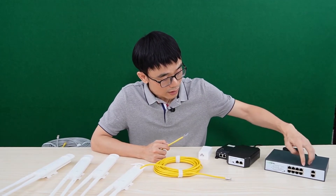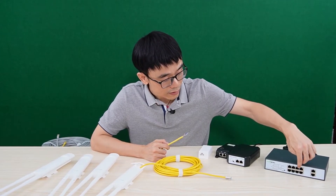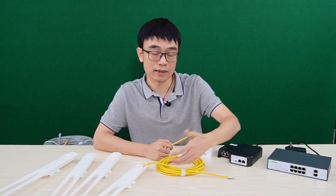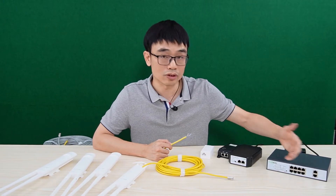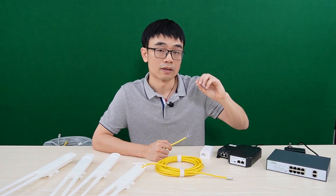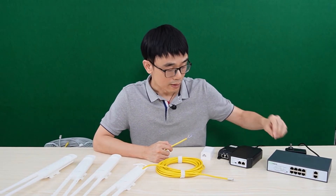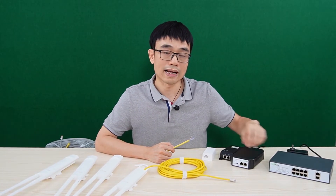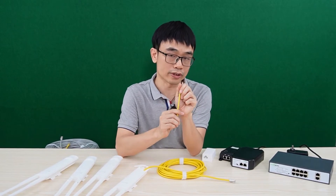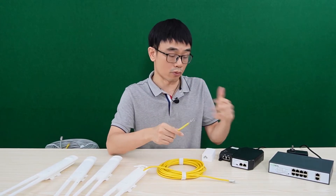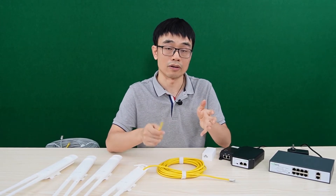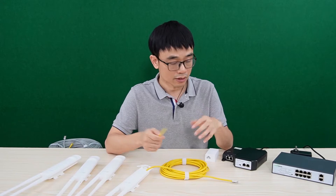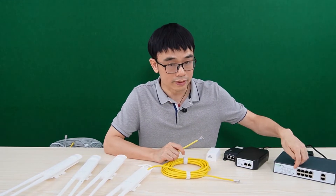Why does that regular port power this device? Because it just uses the first group. But the long range port also uses all four twisted pairs — that's the reason it can supply long range up to 500 meters. So it doesn't work either.